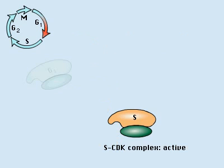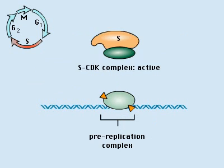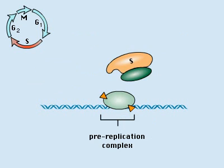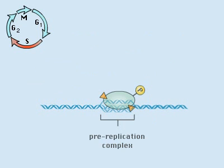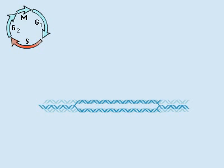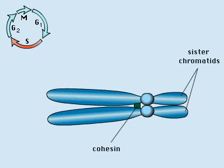Release of S-phase CDK activity marks the onset of S-phase. S-phase CDK complexes phosphorylate pre-replication complexes, inducing one round of replication initiation. Each chromosome is replicated, forming two sister chromatids connected by cohesin molecules.